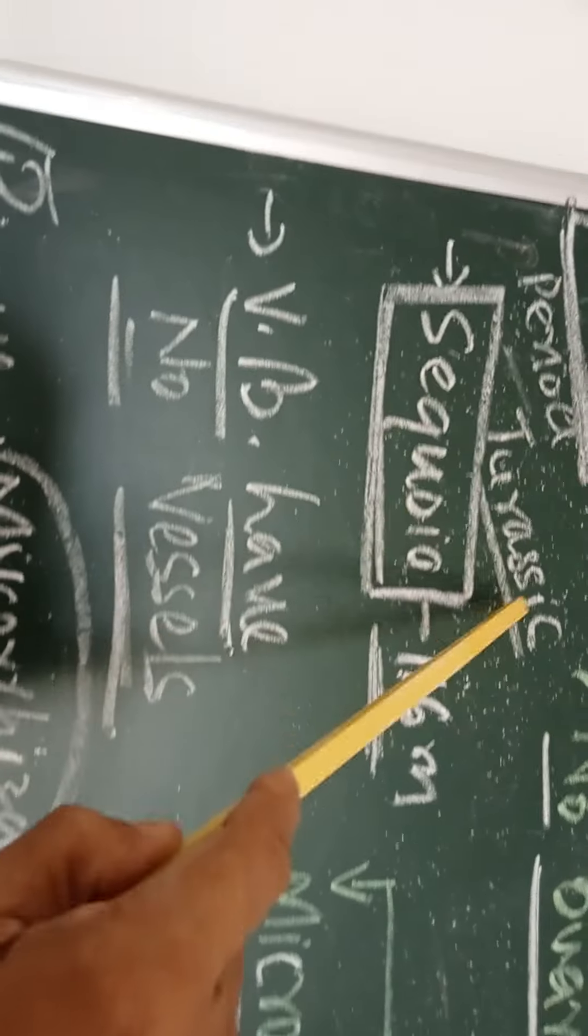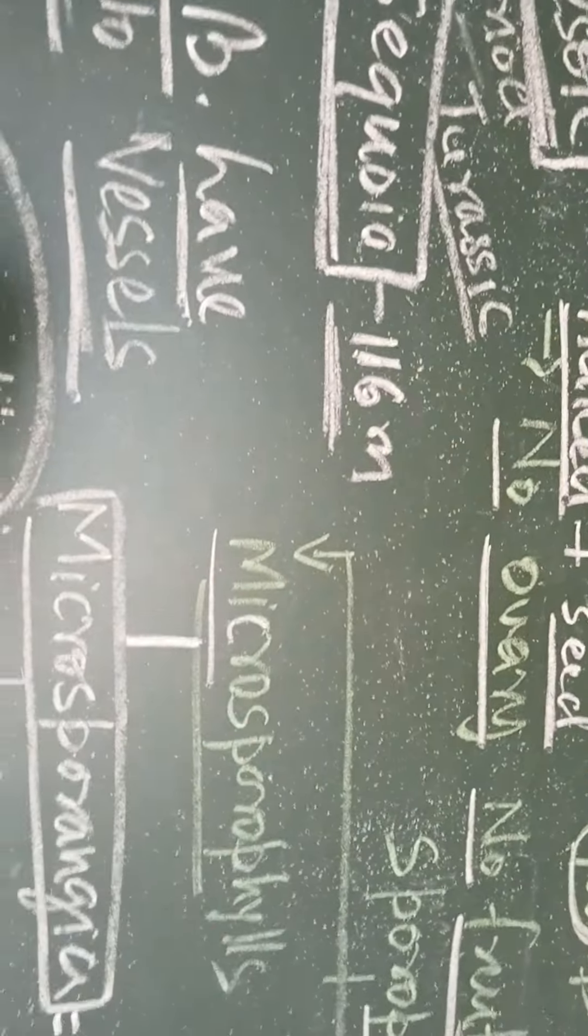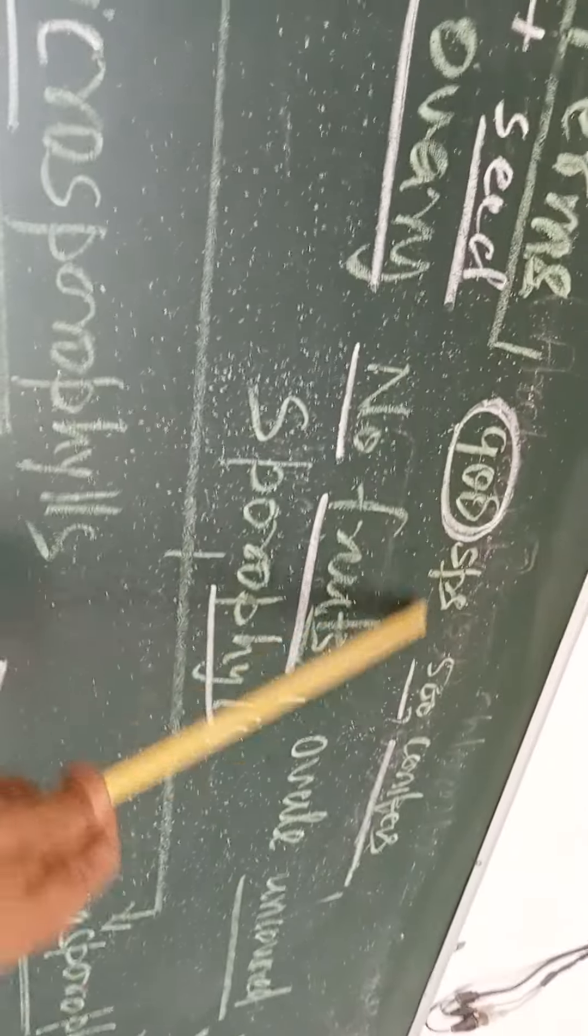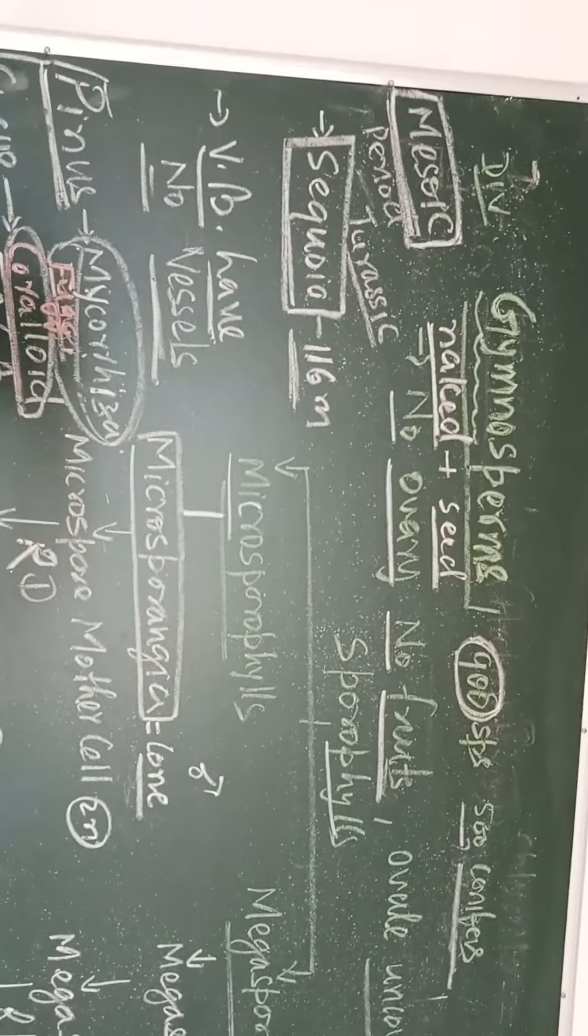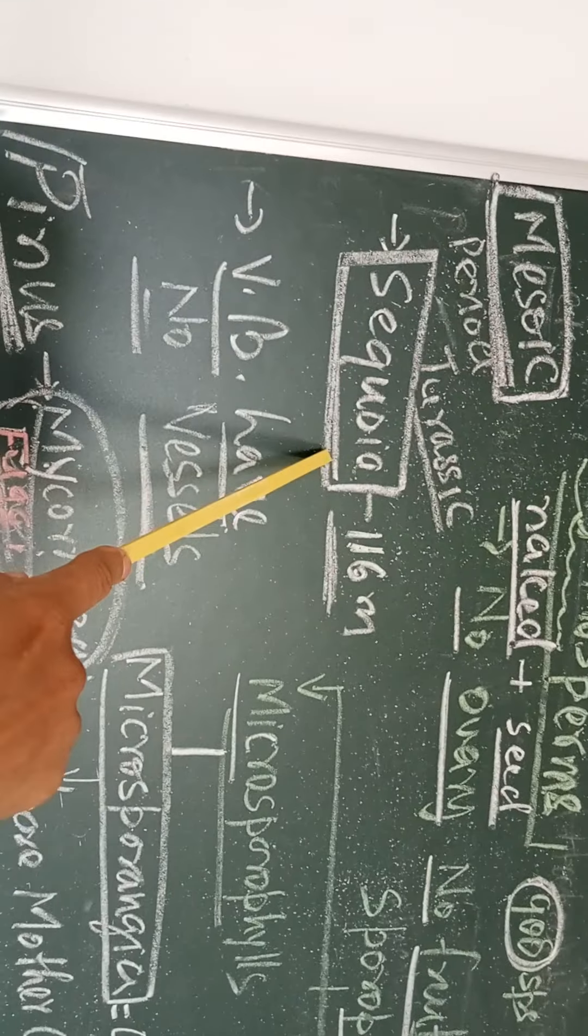When you come to the features, you will observe that it generally originated in Mesozoic or Jurassic era of the history of plant evolution. Gymnosperm's name is given as they are naked seeded plants. The first feature we have to study: naked seeded plant, no ovary, no fruits, ovules are uncovered. It has nearly 900 species yet, 500 of them are conifers found in cone-like regions where snowfall takes place. The feature is Sequoia, the tallest tree yet known at 116 meter height.